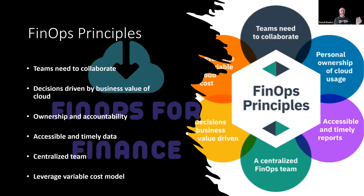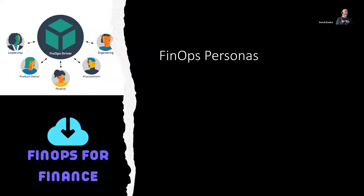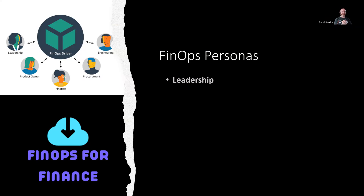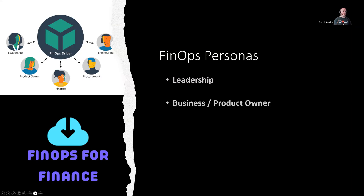Now the FinOps personas — the who of FinOps. First is leadership: the budget holders. If things go massively over budget, they're accountable and need to ensure their teams are being effective with resources. They receive overview reporting from the FinOps team, get summaries of what departments are doing, and provide buy-in for initiatives — pushing them down across the organization to make sure they happen, because the buck essentially stops with them.